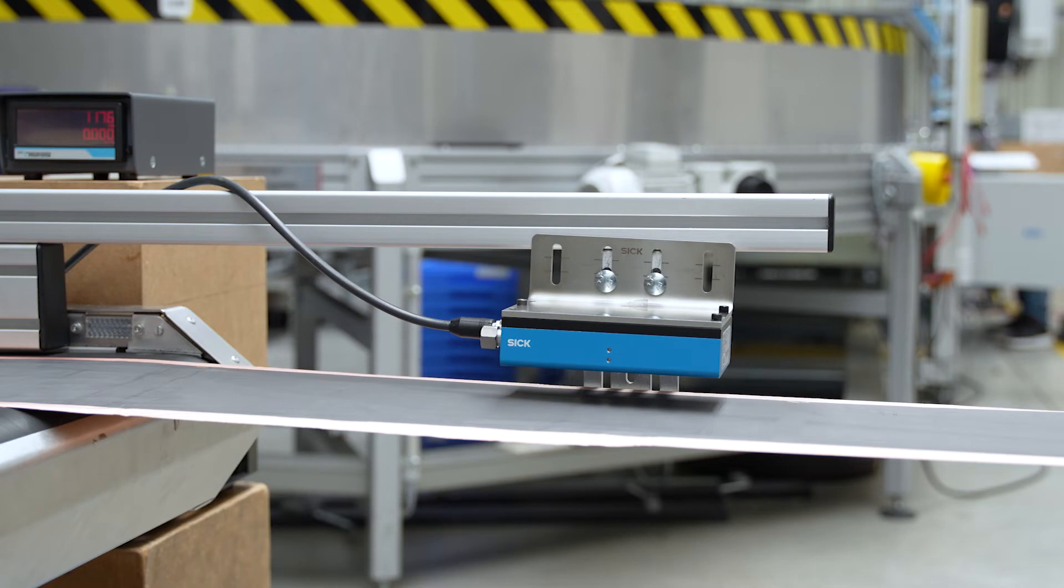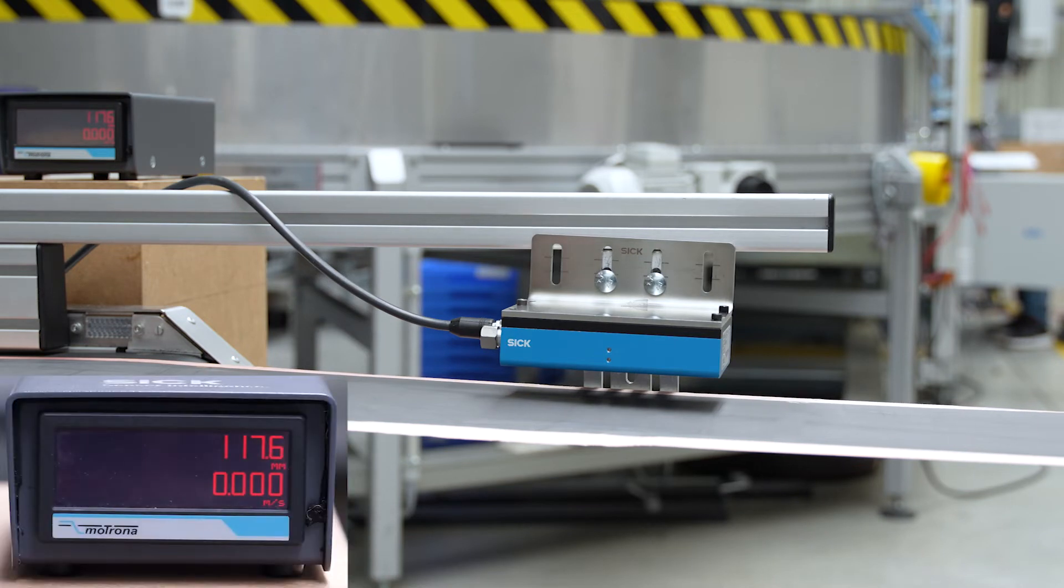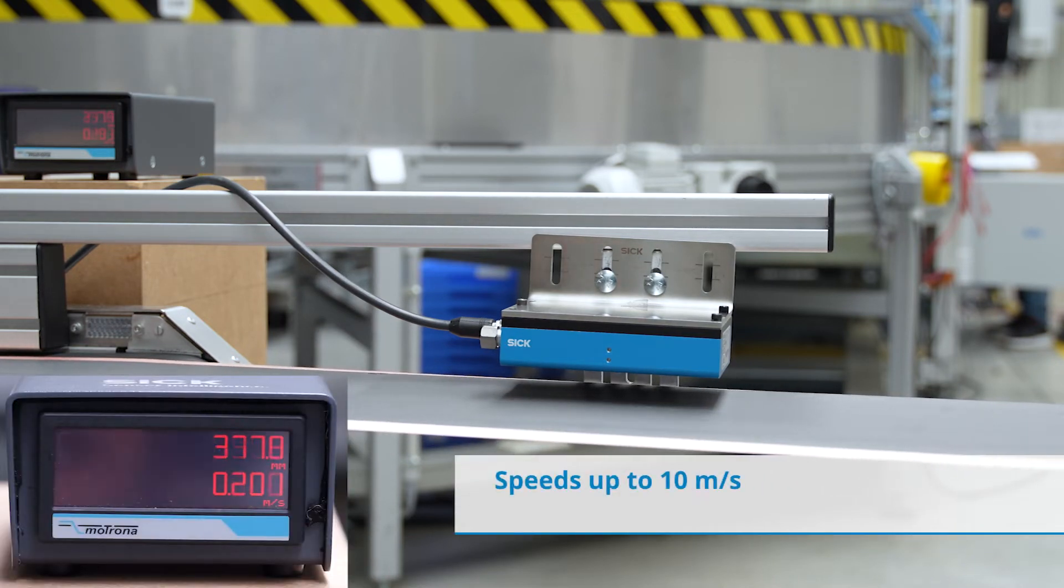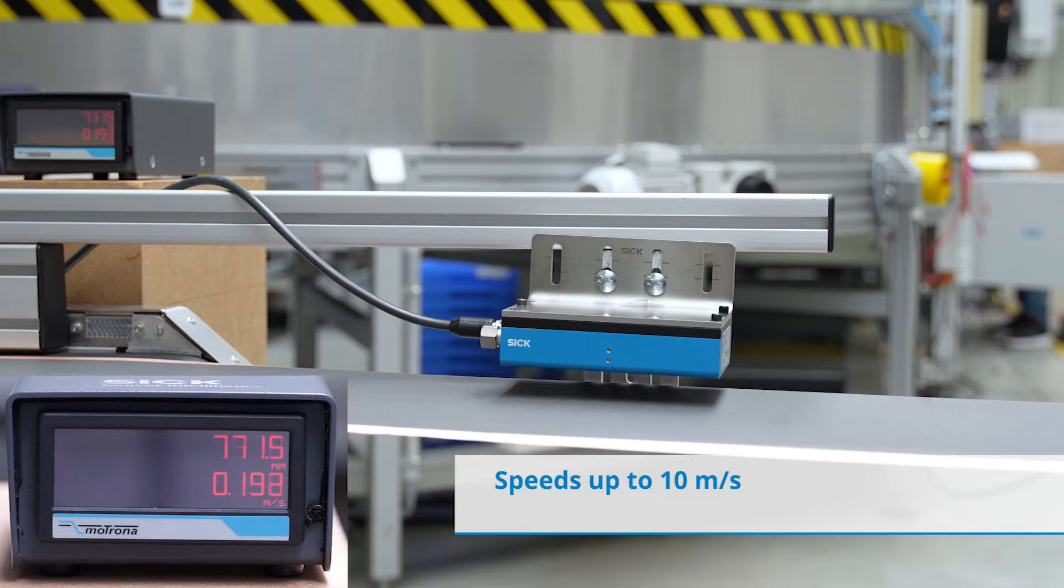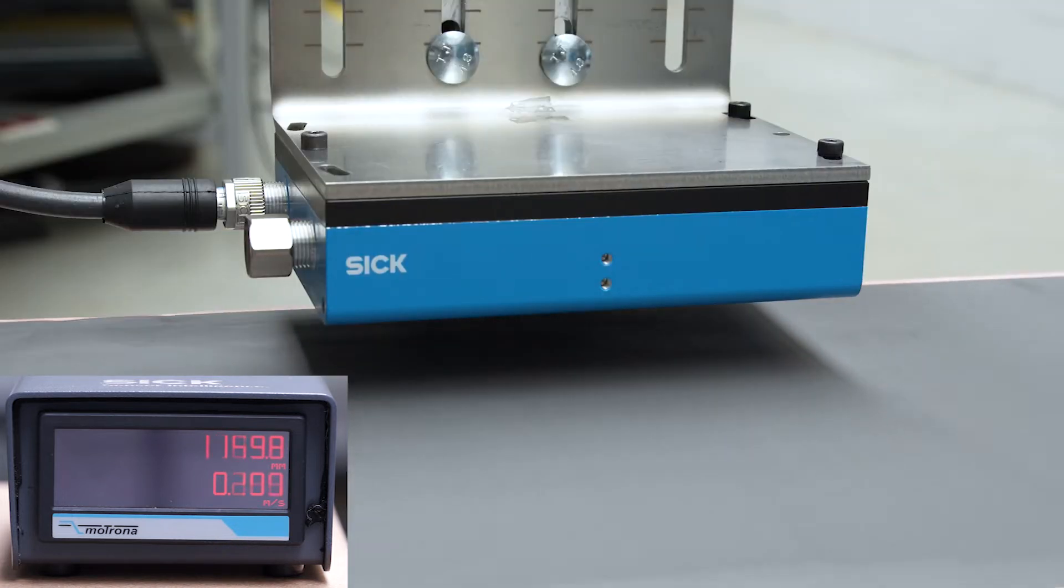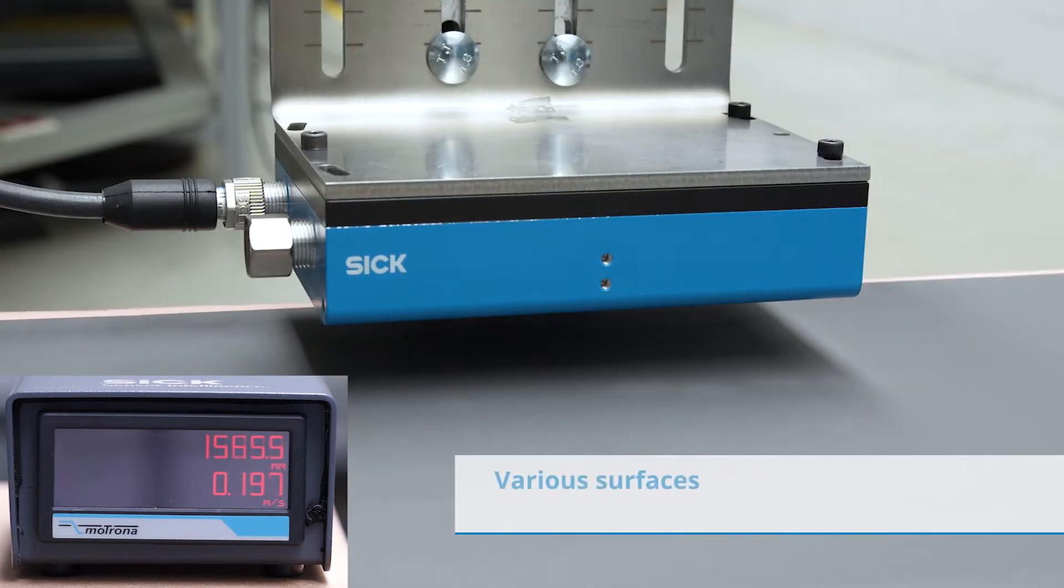To demonstrate, we will take a sample of copper film. First we will measure on the coated side of the film. As you can see, accurate measurements are also produced directly from the copper surface.